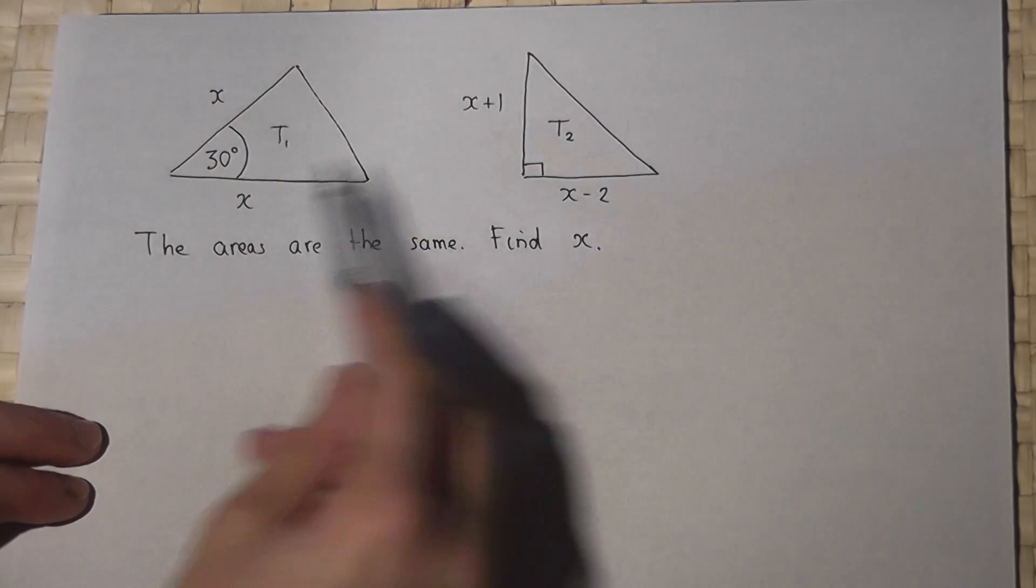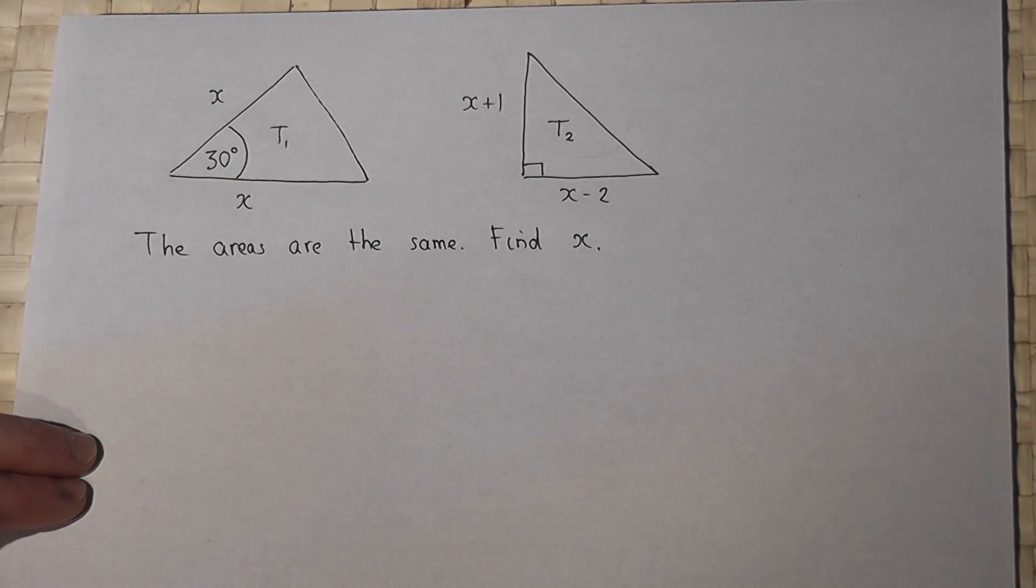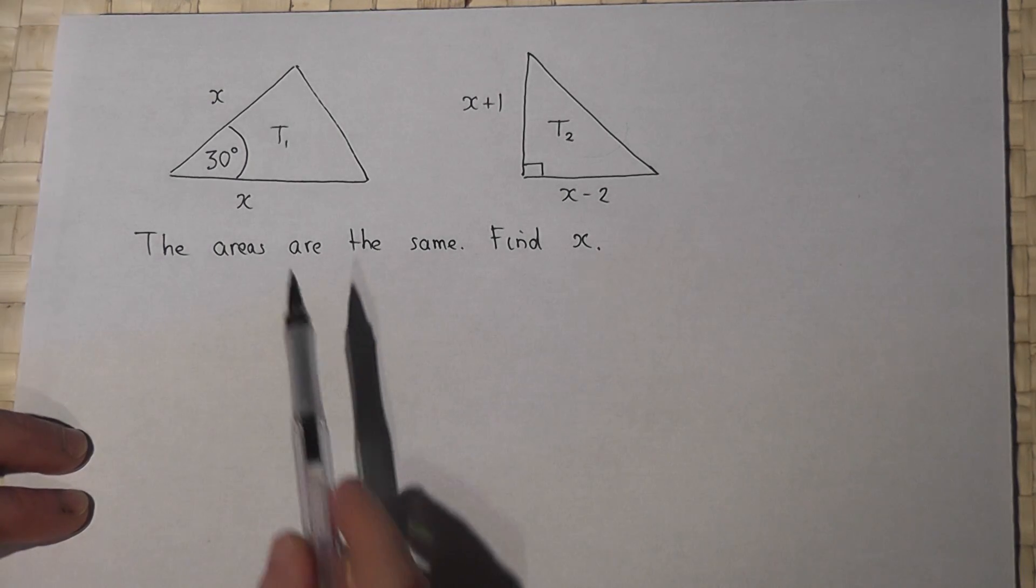In this question we're given two triangles and we're told that the area of both triangles is the same, and we're asked to calculate x. So we begin by finding an expression for the area of both triangles.